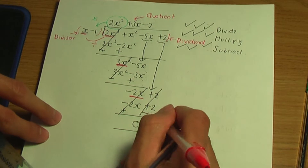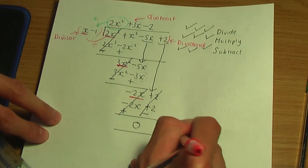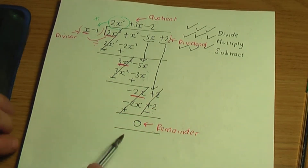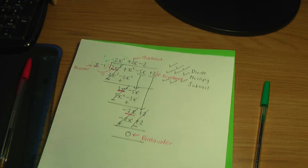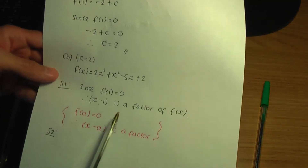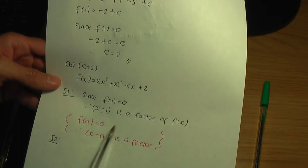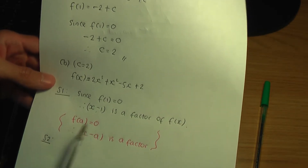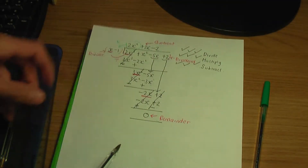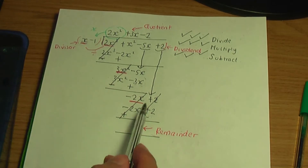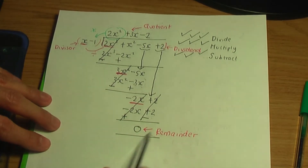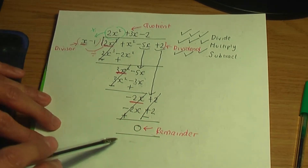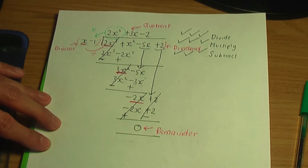The remainder is zero, and that makes sense because we're dividing by a factor. The word factor means the remainder will be zero upon division. So the zero remainder is a good double-check that we're doing the question correctly.